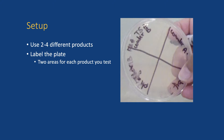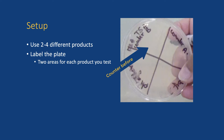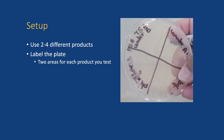For example, I will clean my kitchen counter with disinfectant, so I will have a counter before and a counter after area on my plate. I will also use hand sanitizer on my hands after rubbing my phone, so I will have a phone before and a phone after area.